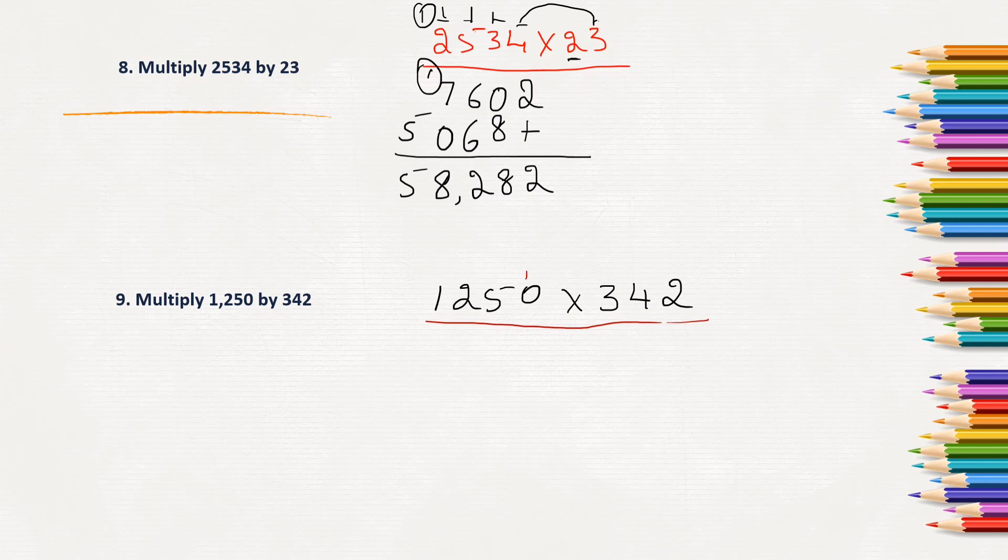So, first, let us find out what is 1250 into 2. So, 2 times 0 is 0, 2 times 5 is 10, 0, and 1 carry. 2 times 2 is 4 plus 1, 5. 2 times 1 is 2 itself.